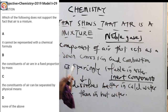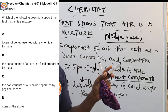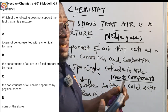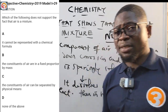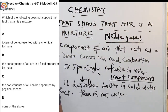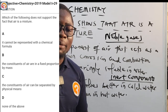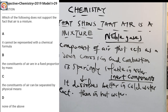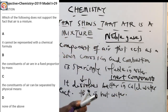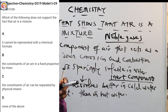The constituents of air are NOT in a fixed proportion by mass. The proportion of gases in air can vary depending on the location and time, which is a characteristic of a mixture, not a compound. That 1% of other substances can vary — it's not in a fixed proportion by mass. So the answer to question 29 is B.